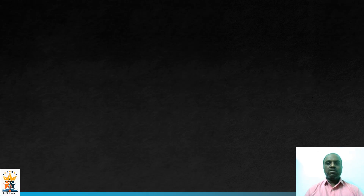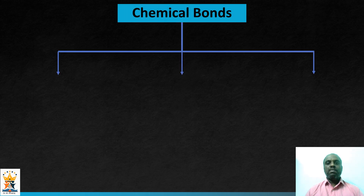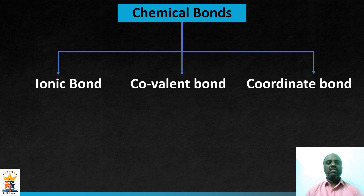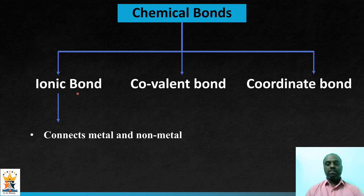Before discussing about the formation and structure of sodium chloride, let us learn what is ionic bond first. Ionic bond is a kind of chemical bond. If you look at the classification of chemical bonds, you can find ionic bond, covalent bond, and coordinate bonds. Ionic bond in particular connects metal to the non-metal.